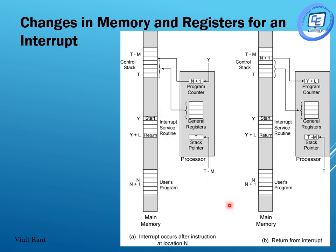Once the interrupt is processed and we return from the interrupt, the next instruction in the program counter will be Y plus L. At this time, restoration happens: the previously halted user program's next instruction address N+1 that was stored on the control stack is restored back into the program counter, and PSW and general purpose registers are restored. Due to that, the stack pointer changes from T minus M back to T. That is the change in memory and registers when an interrupt occurs.